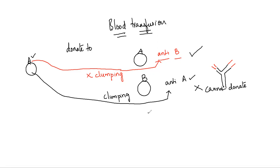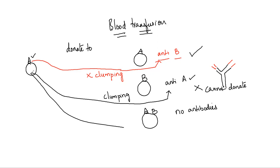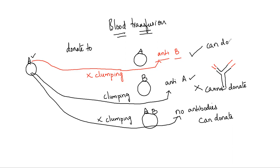Next, let us take a person with blood group AB — they have no antibodies. If you donate blood group A here, there are no antibodies to be triggered by the antigen. There will be no clumping process, no reaction between antigen and antibodies. So you can donate blood to this particular AB person.